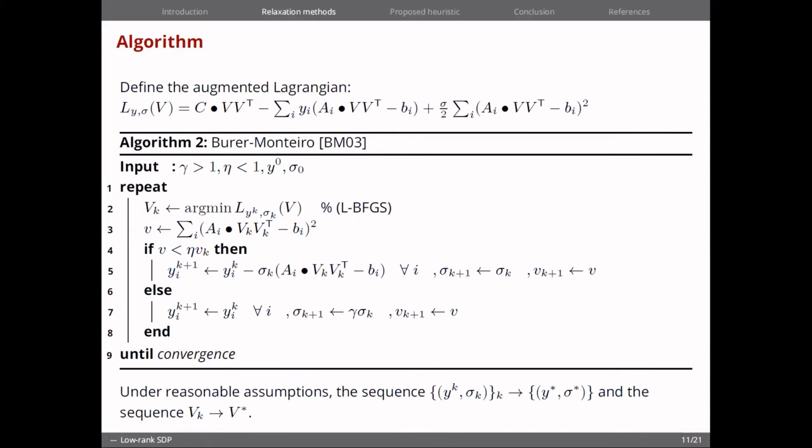So now the problem becomes how do you compute these updates, these multiplier updates. This is given in algorithm two, and a key component in this algorithm is how to compute the minimum of this Lagrangian function. The authors propose a use of the limited memory BFGS, which is an interior point method.